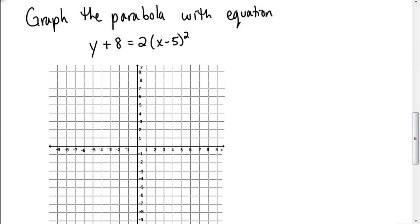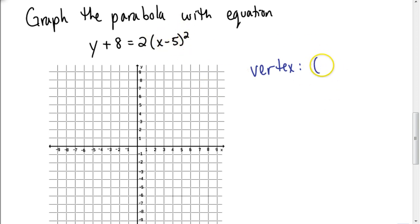Let's take a look at this first example. The equation here is y plus 8 equals 2 times x minus 5 squared — an equation we've looked at in a previous video where we found these individual pieces. To graph it, we first find the vertex, which is the coordinate h and k. We take the opposite of what happens to x, which in this case gives us positive 5. For the y value, we take the opposite of the plus 8, giving us negative 8. So the vertex is at the coordinate (5, negative 8).